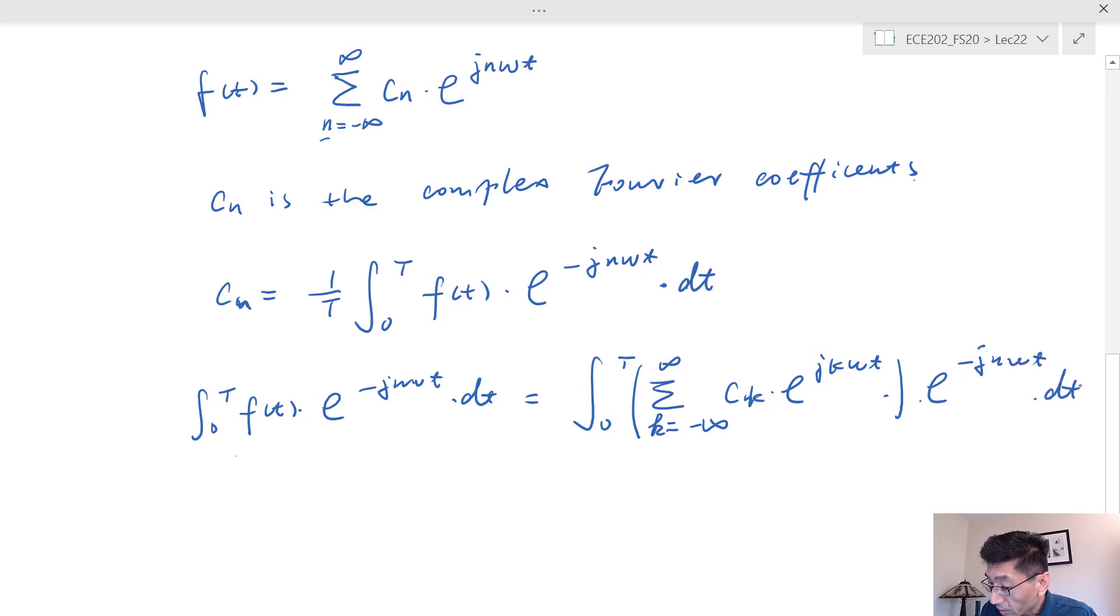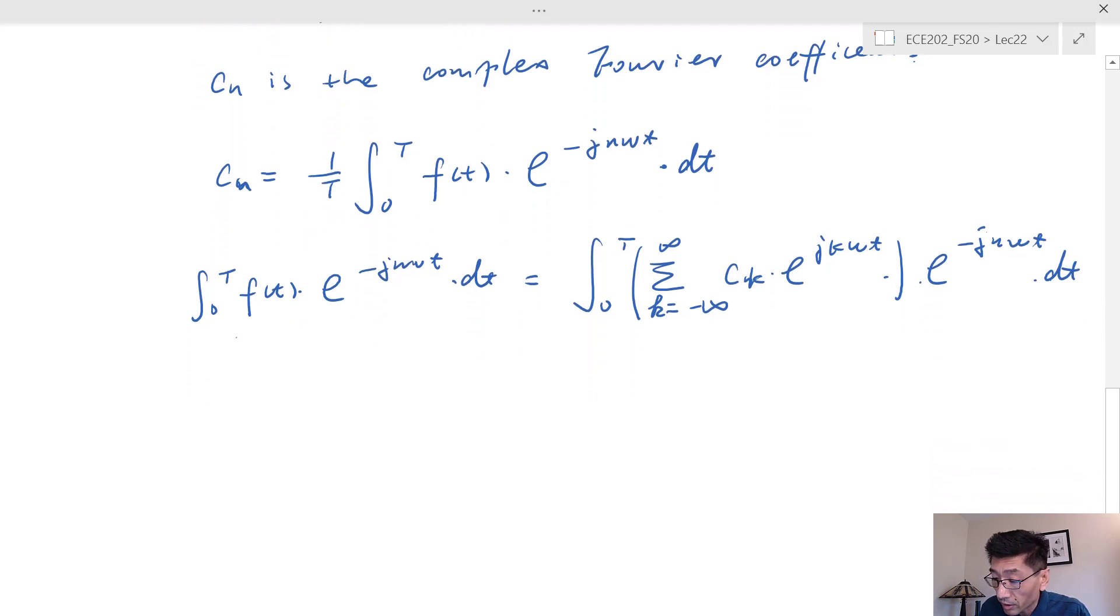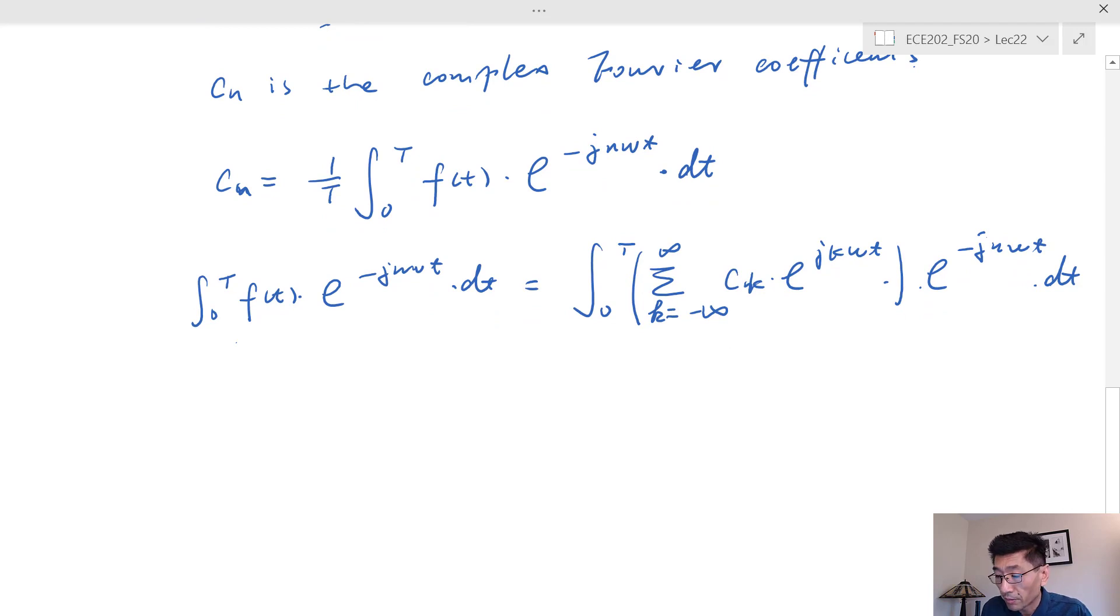For others we'll have e^(j*something), and that will integrate over a fundamental period, that has to be 0. So this one here is going to be equal to T times C_n.